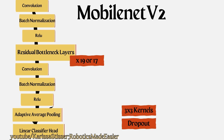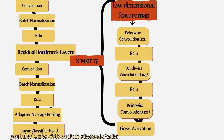The sequences have a convolution, batch normalization, and ReLU before and after a series of residual bottleneck layers — 19 in the paper, 17 in the code, but it doesn't really matter. Then there's adaptive average pooling, then a linear classifier head, which tells the network what you're actually looking for to classify. They use three by three kernels and dropout.